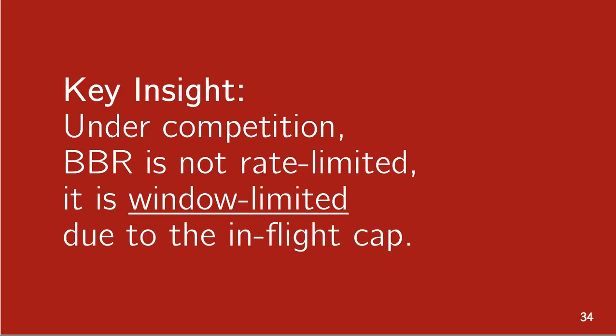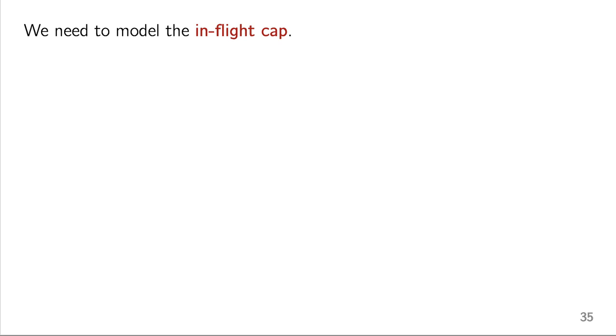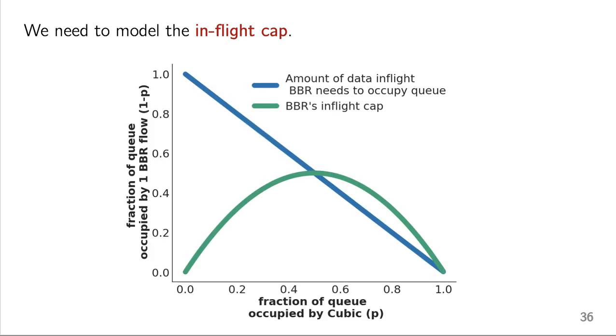So this leads to our key insight that under competition, BBR is not rate limited. It is window limited because of this in-flight cap. So if we can figure out how to model the in-flight cap, we can model BBR's throughput. So we need to add this in-flight cap to our model. And it turns out that it's this green parabola. So let's discuss how we derive this.